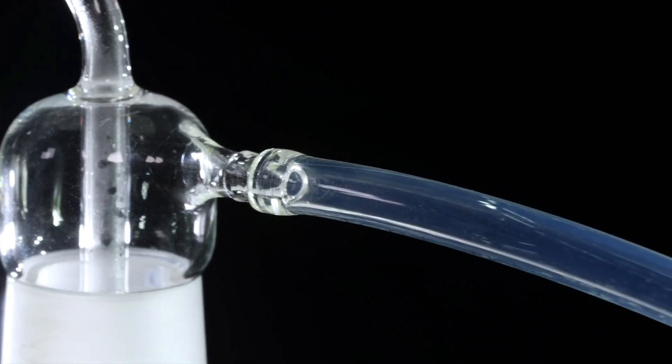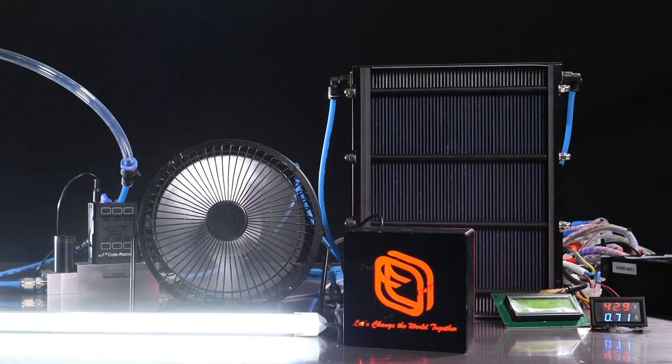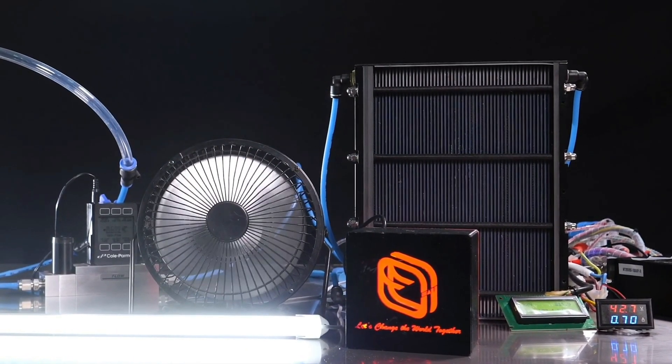When hydrogen is needed, you simply submerge the Si+ powder into water and mix it. And that's all—hydrogen gas then starts bubbling out.